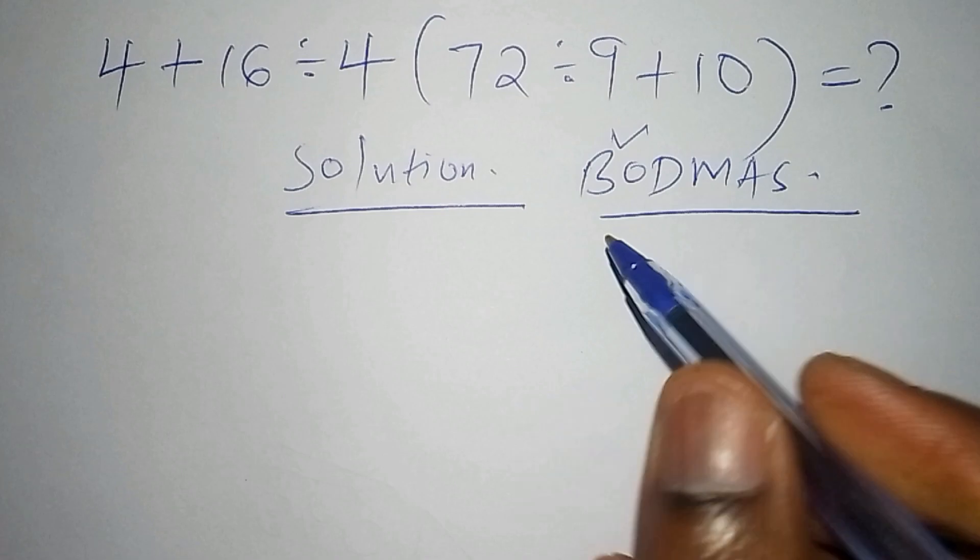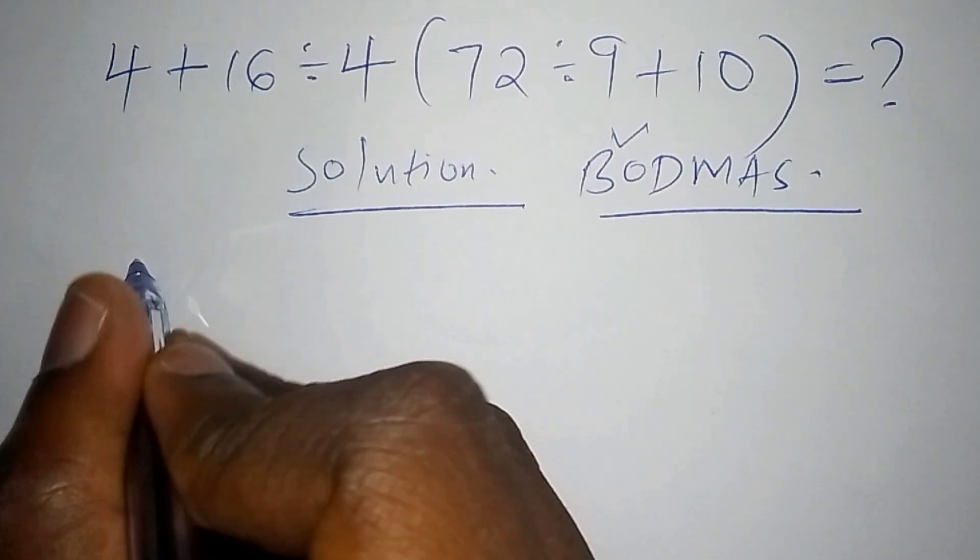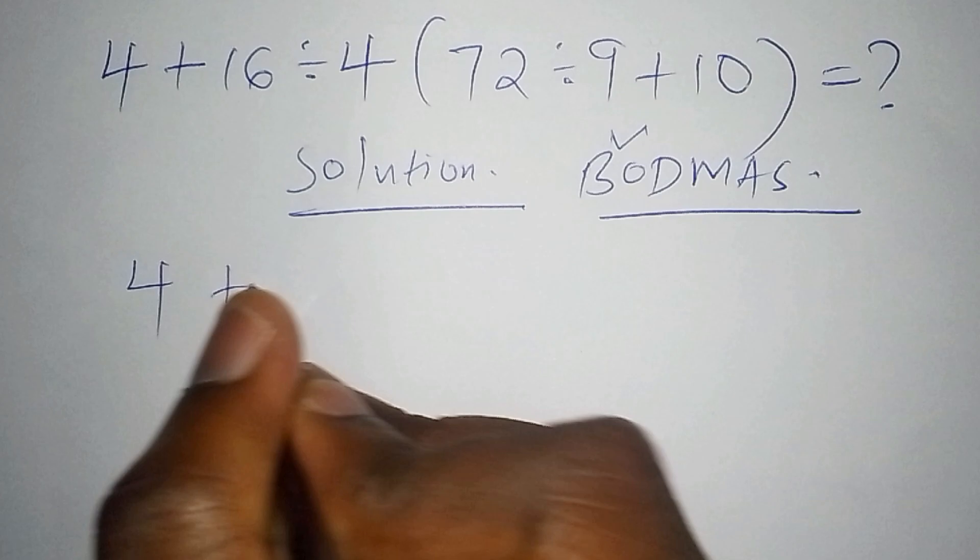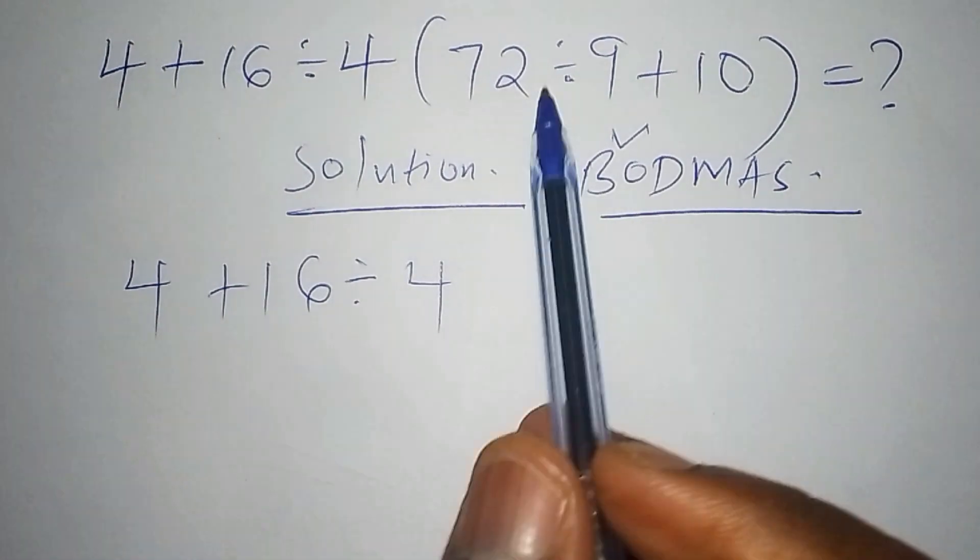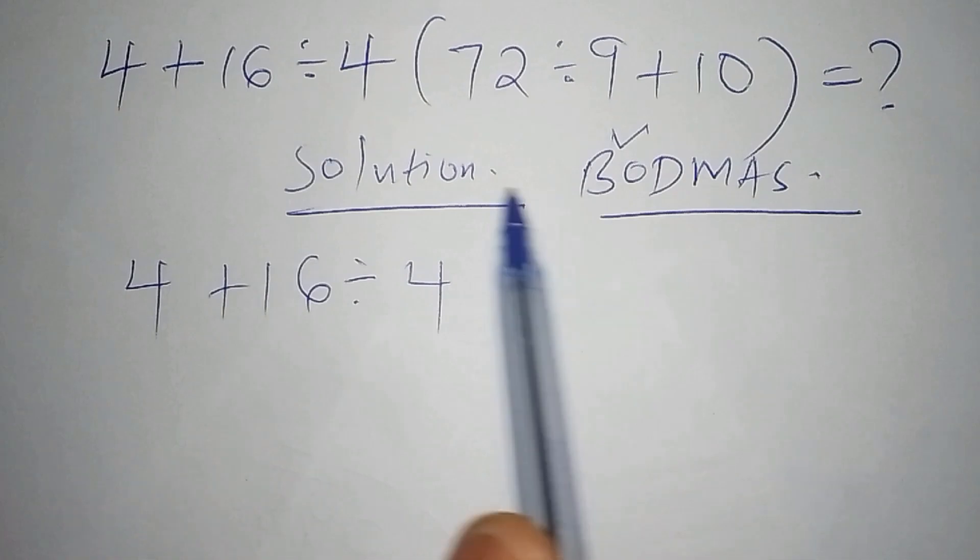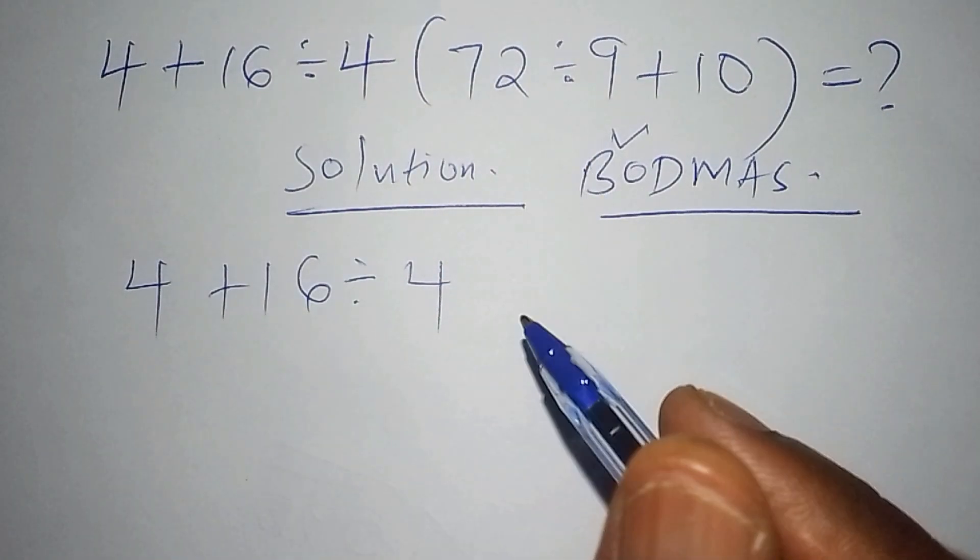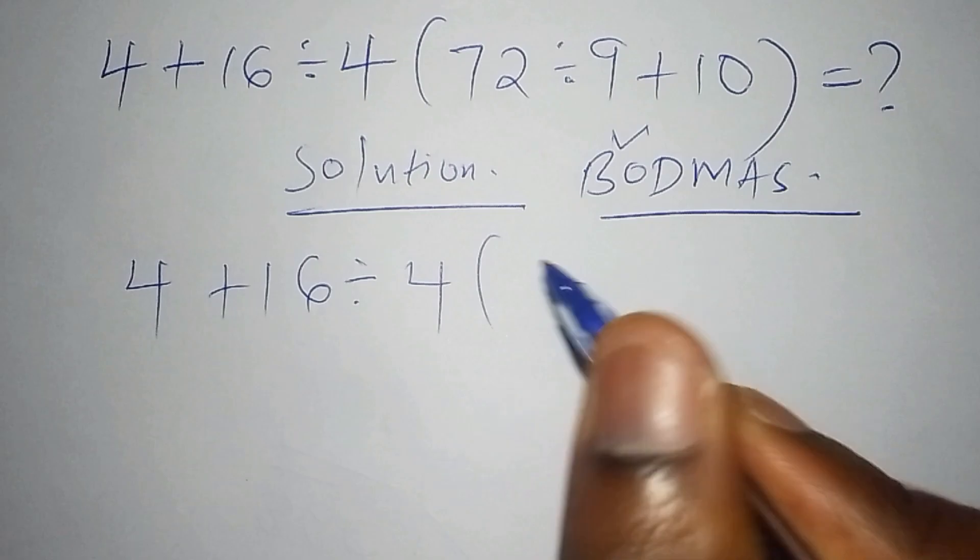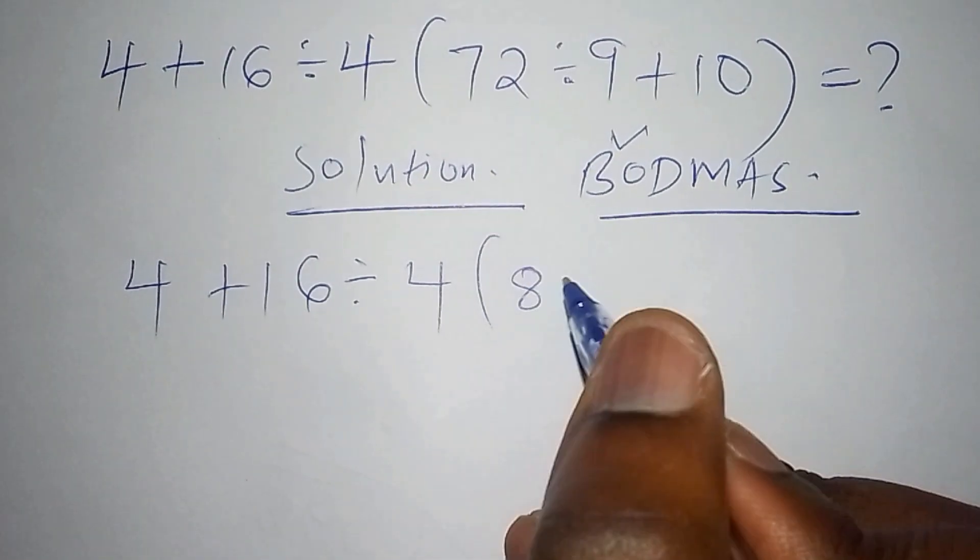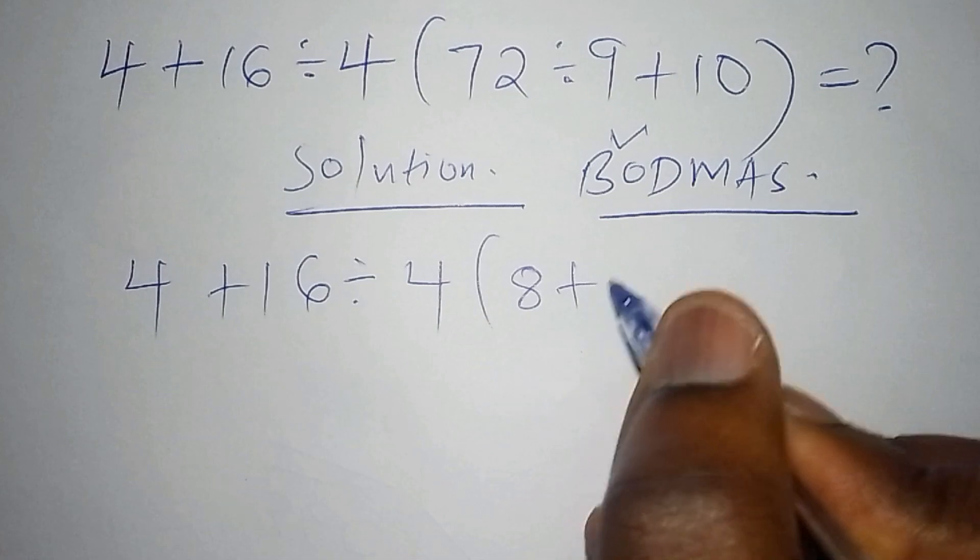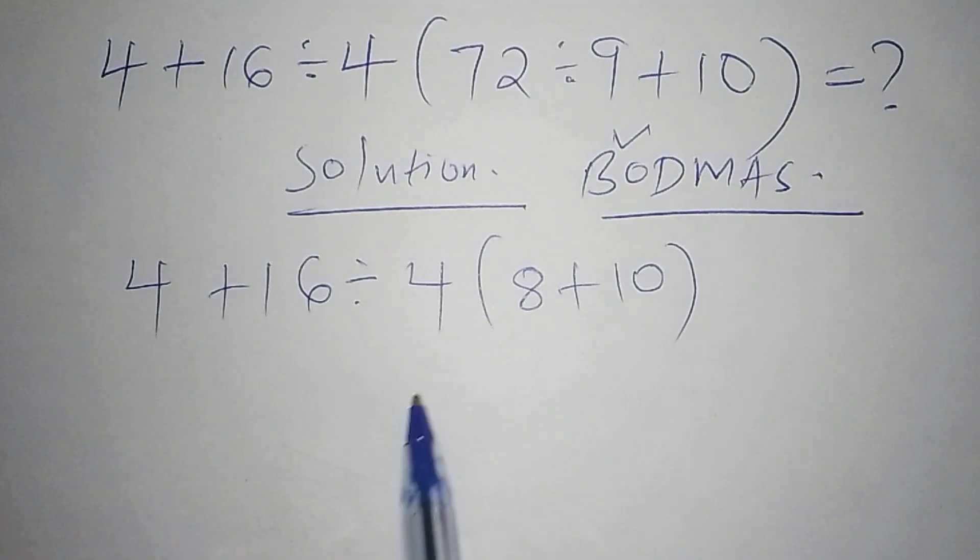We shall have 4 + 16 ÷ 4. Remember we are working out the number inside the bracket, so we work out 72 ÷ 9, which means (72 ÷ 9), and there we have 8. Then 8 + 10, then we put into bracket. As you can see, we're still not yet done with the bracket.